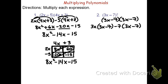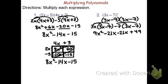If we multiply it out, 3x times 3x is 9x squared. 3x times negative 7 is negative 21x. Negative 7 times 3x is also negative 21x, and negative 7 times negative 7 is positive 49. Combining the like terms, we get 9x squared minus 42x plus 49.